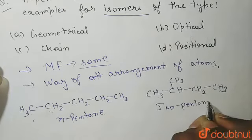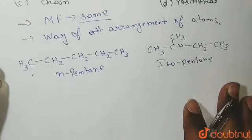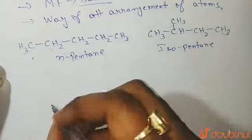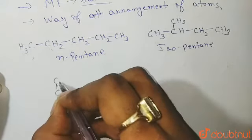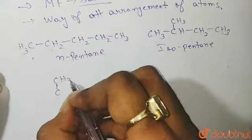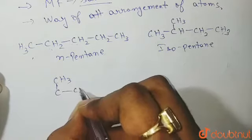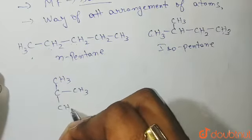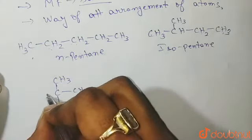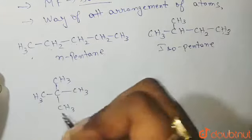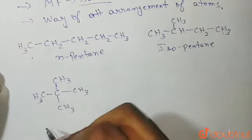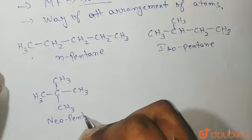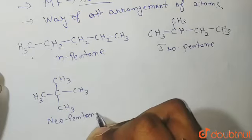The next structure is neopentane. Neopentane has a central carbon with four CH3 groups attached to it — one carbon in the centre and four CH3 groups around it. This is the structure of neopentane.